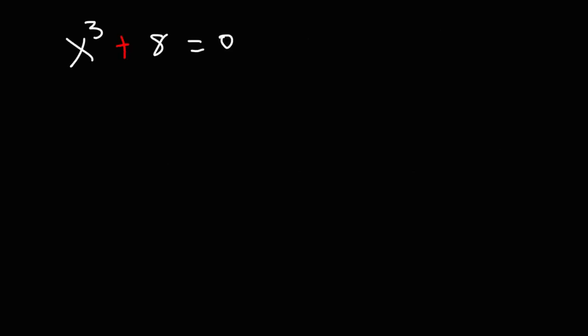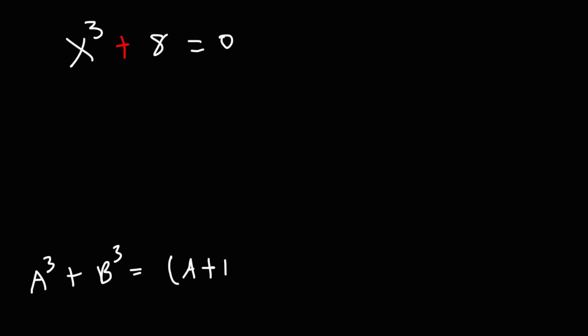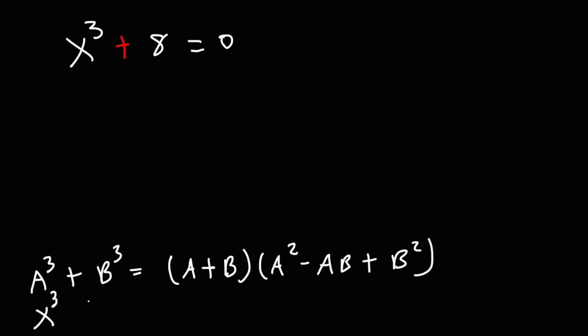Try this one: x cubed plus 8 is equal to 0. We have a degree 3 polynomial, so we expect a total of 3 solutions — either 3 real, or 1 real and 2 imaginary. What we have here is a sum of perfect cubes, so we use the formula: A cubed plus B cubed factors into (A plus B)(A squared minus AB plus B squared). Here, x cubed is A cubed and 8 is B cubed. So A is the cube root of x cubed, which is x, and B is the cube root of 8, which is 2.